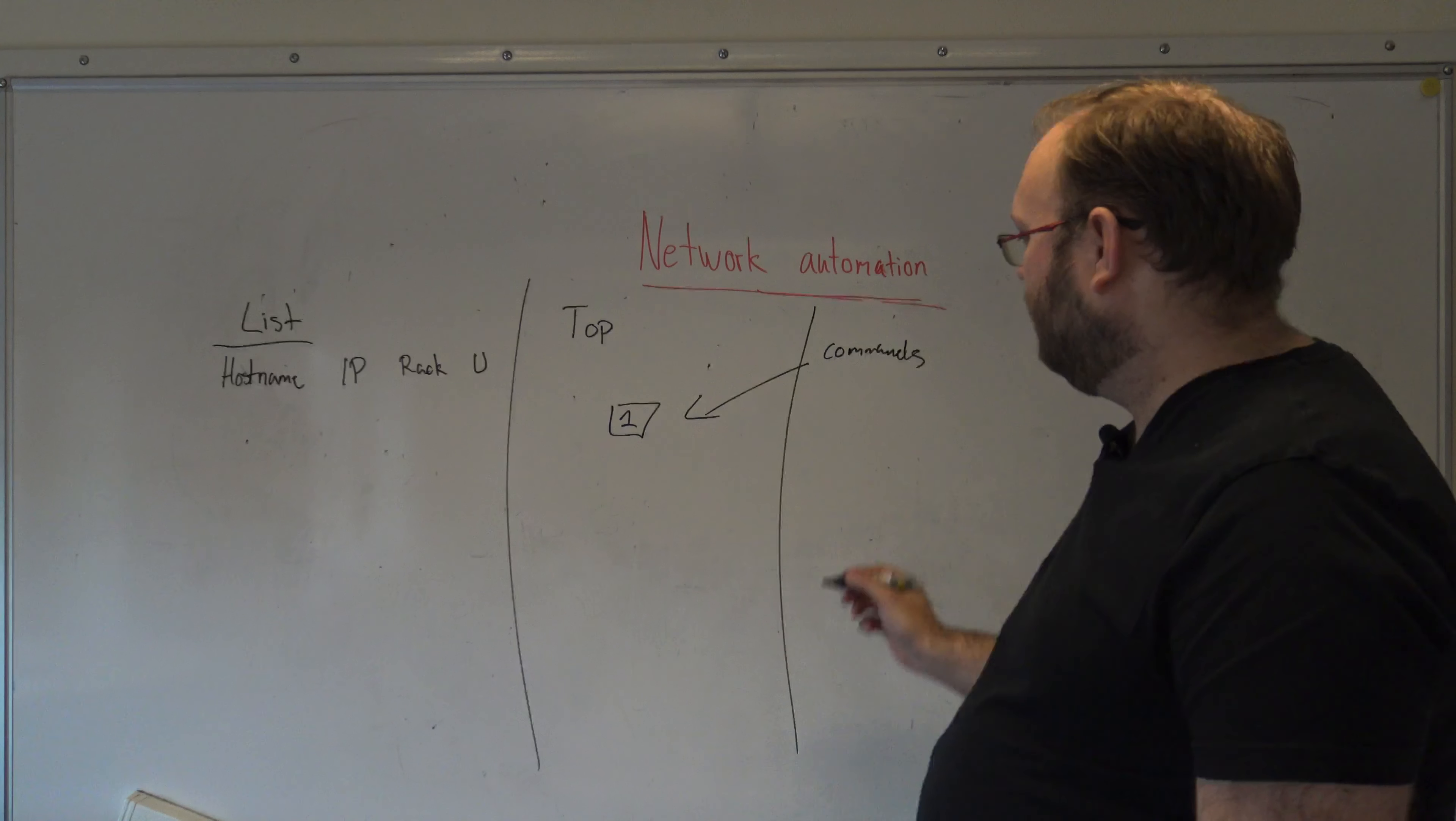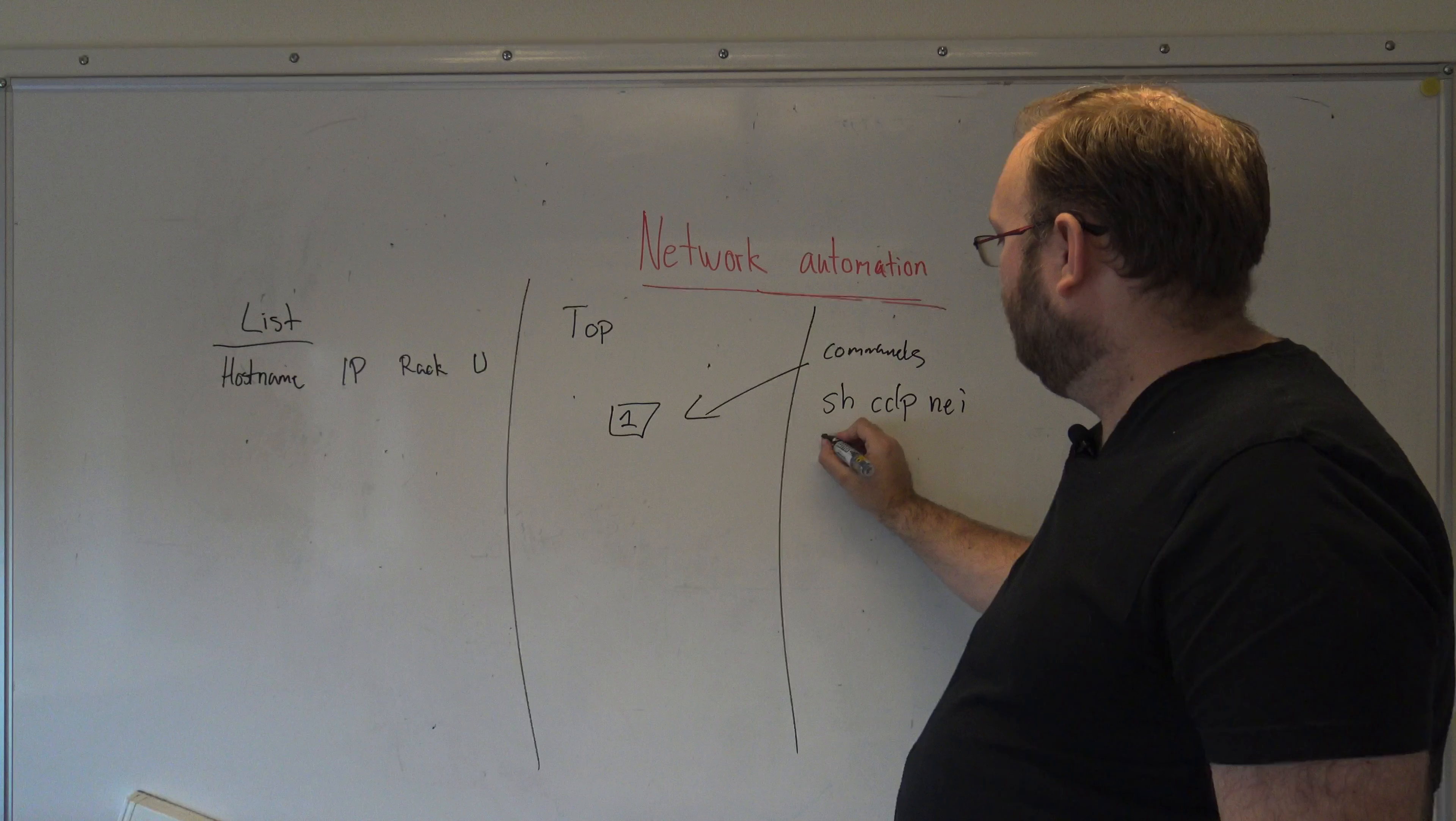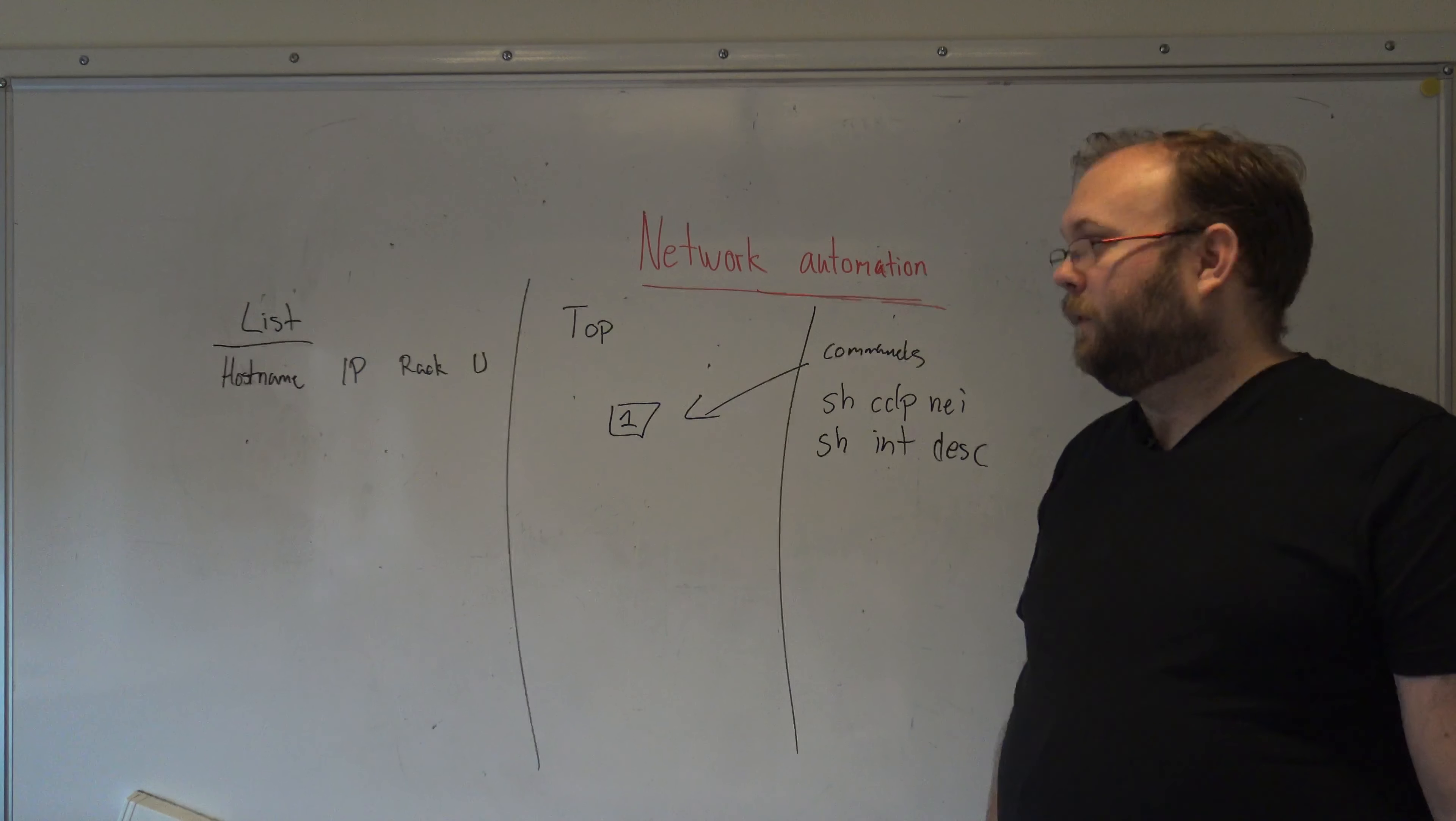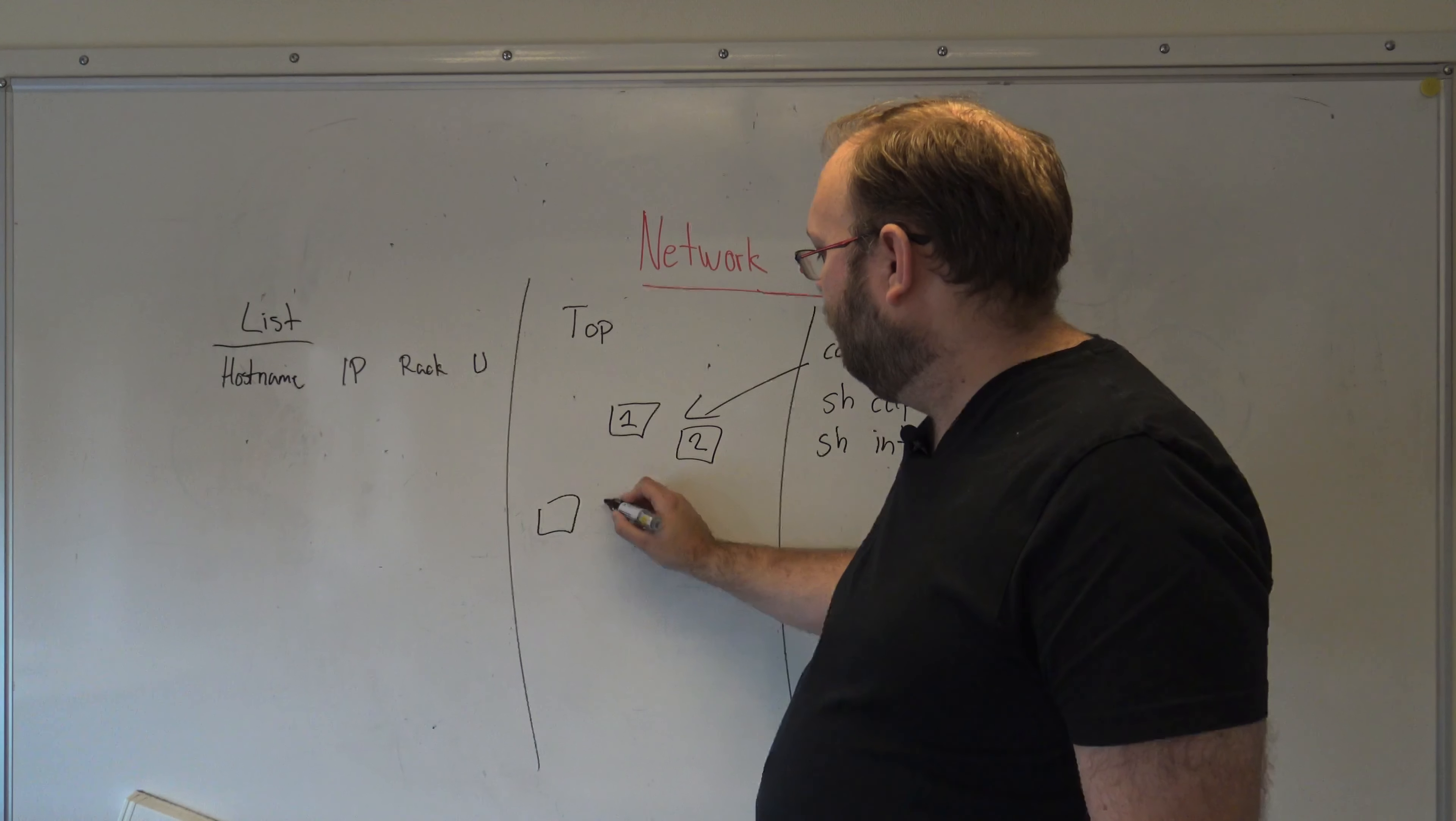And how you do the topology is that you go into equipment number one and then you run a few commands to figure out how the topology looks like: show CDP neighbors, show int description, and you have a few more of this. After a while you have built a topology based on what you see in these commands.